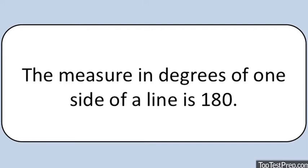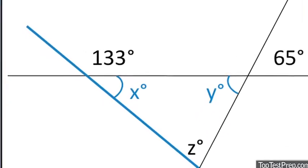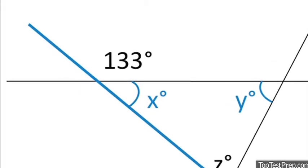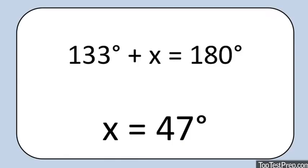The measure in degrees of one side of a line is 180. Angle X and the angle measuring 133 degrees together form one side of a line. This means that 133 plus X equals 180, so X equals 47.